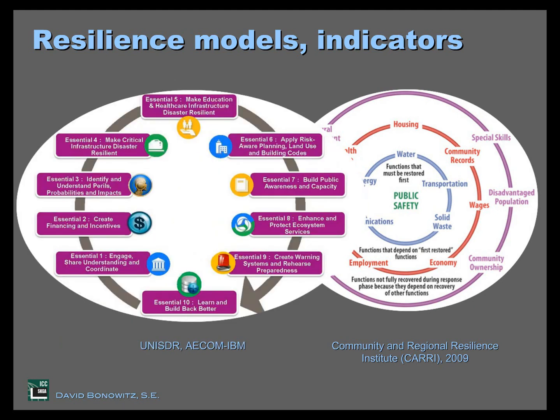There are even more models. Here's one from the UN, which is less a definition and more of a how-to — how to make your community resilient — which seems like a good idea, but it's a little bit silly. Look at number five at the top of the screen: 'Make education and healthcare infrastructure disaster resilient.' Okay, let's do that, but it's not really helpful. It reminds me of Steve Martin's old joke about how to be a millionaire: Step one, get a million dollars.